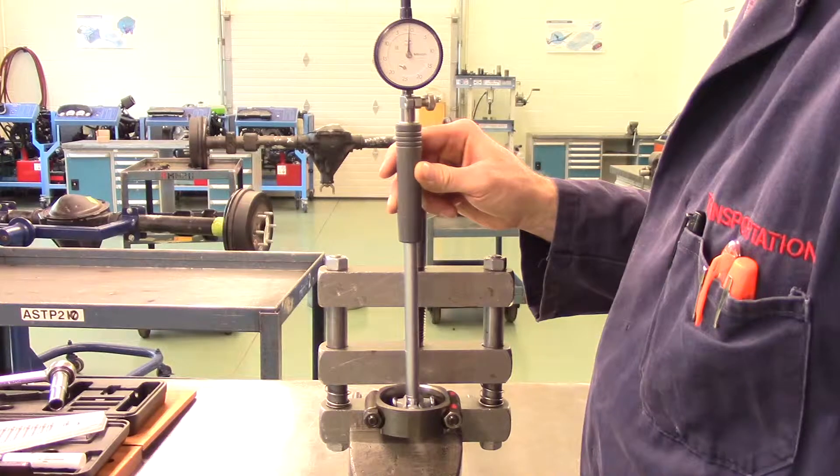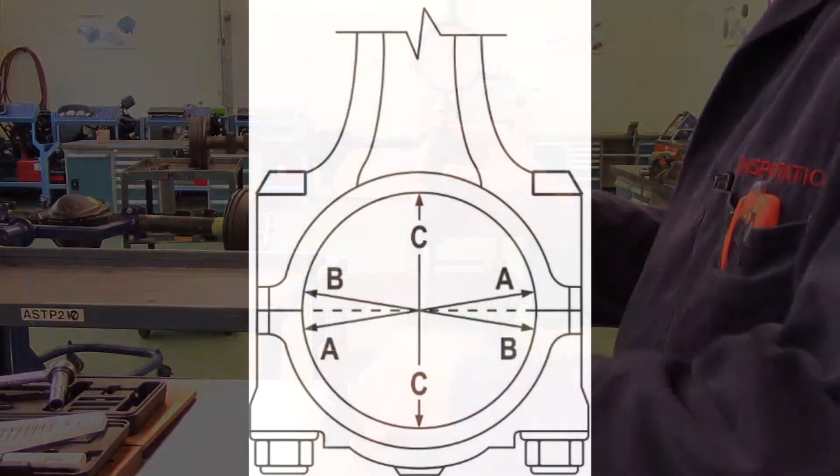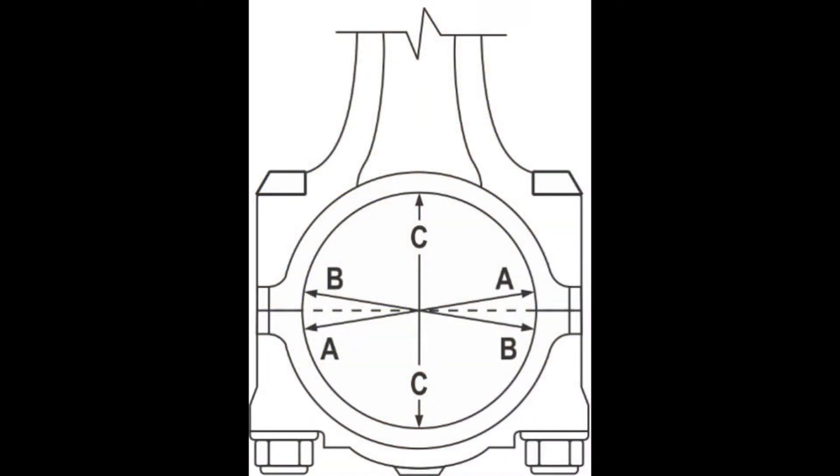Mount the connecting rod into a rod vise on your bench. Measure the big end bore of the connecting rod in three separate places, not near the cap parting line, as indicated in the diagram.